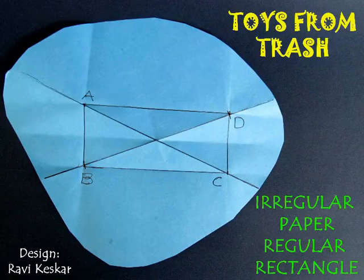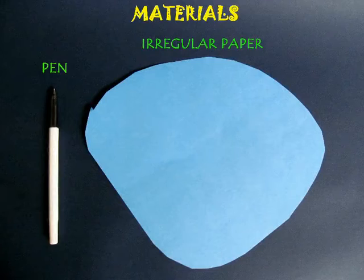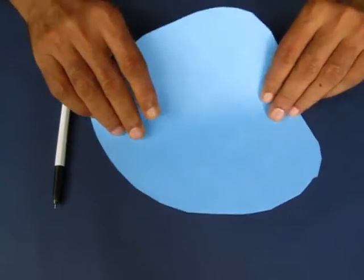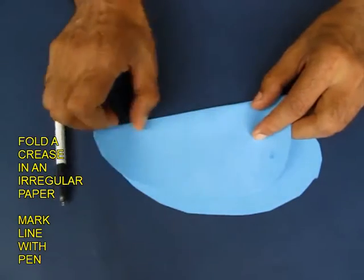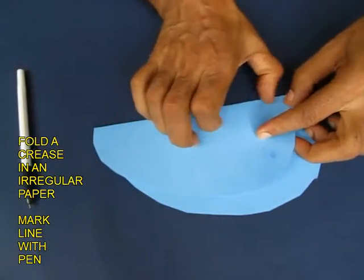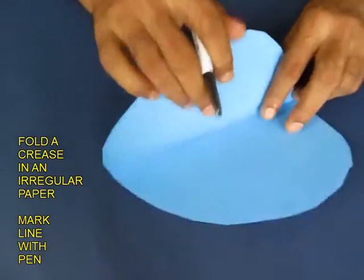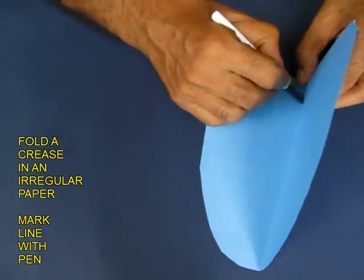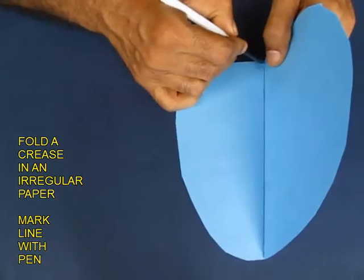From an irregular paper you can fold a very beautiful regular rectangle. For this, take an irregular shape of paper and fold a crease. A crease will generate a straight line — mark this straight line with the pen.